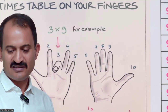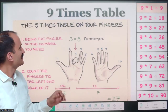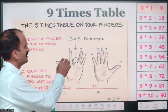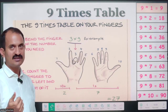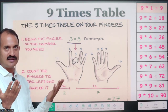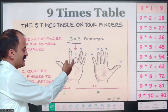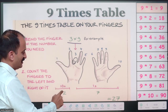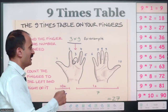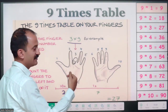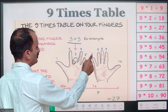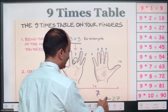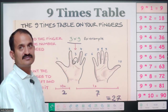The same thing is explained here on the slide. Bend the finger of the number you need. For example, if you need 3 times 9, just fold the third finger. Hold your palm and fold the third finger. The fingers to the left of the folded finger give you the tens digit — that's 2. The fingers to the right give you the units digit — 1, 2, 3, 4, 5, 6, 7 — that's 7. So the answer is 27. 3 nines are 27.